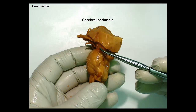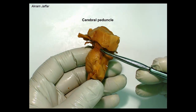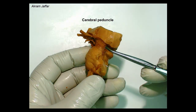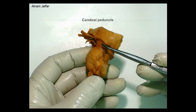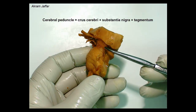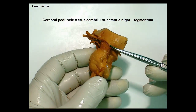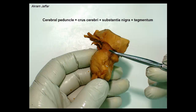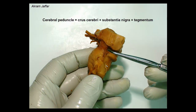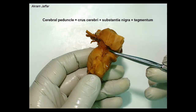You can see here that the cerebral peduncle constitutes most of the lateral part of the midbrain. The cerebral peduncle consists of the crus cerebri, with the dark substance — the substantia nigra — and part of the tegmentum of the midbrain.